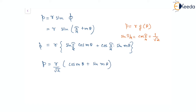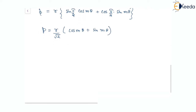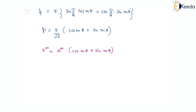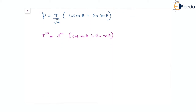Now getting back to our polar equation, which was r^m equal to a^m times (cos(mθ) plus sin(mθ)). The easiest way to eliminate θ is to divide these equations. Dividing p by r^m, we get p over r^m equal to r over (√2 · a^m), and the (cos(mθ) plus sin(mθ)) term cancels out.